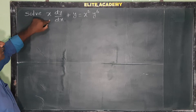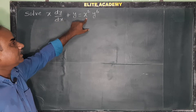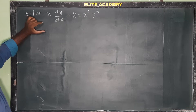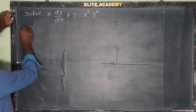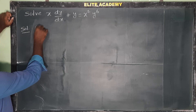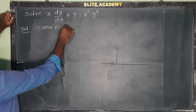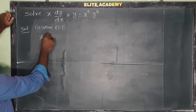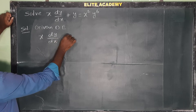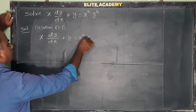Solve: x dy/dx + y = x² y⁶. This is the differential equation we need to solve.